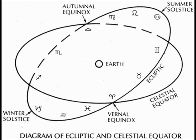As we know, planets, including the planet Earth, move around the sun in a plane of motion. That plane of motion is referred to as the ecliptic.